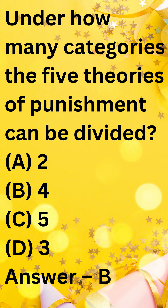The 5th theory of punishment, compensatory theory, is sometimes considered to be a subcategory of retributive theory. The compensatory theory focuses on making the victim of the crime whole by having the offender pay restitution or damages. Therefore, the answer is B.